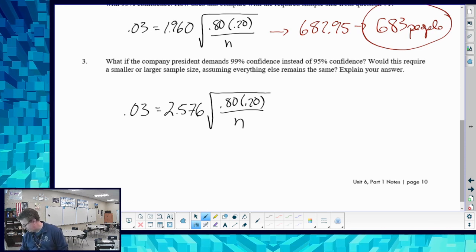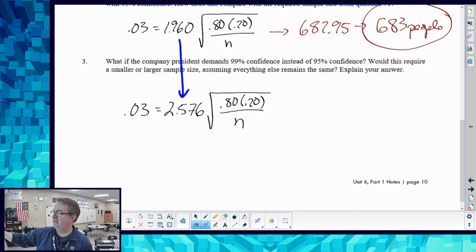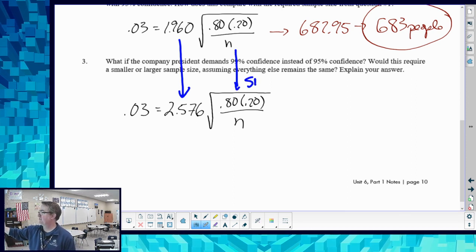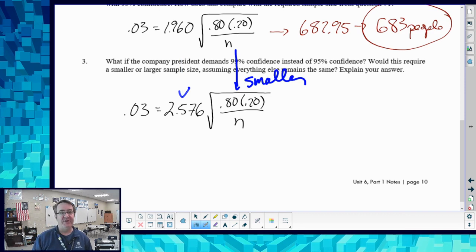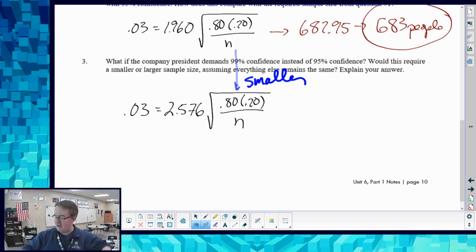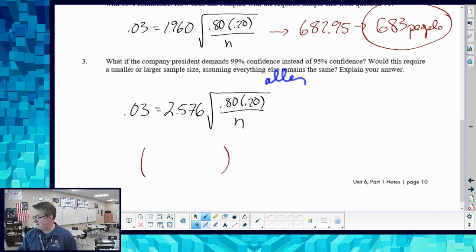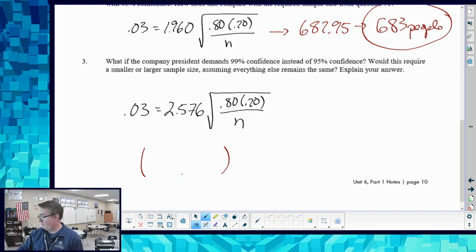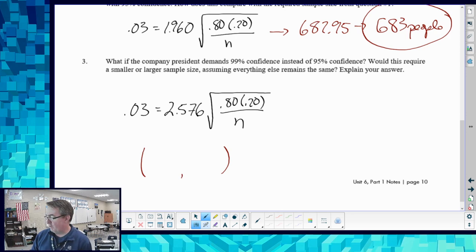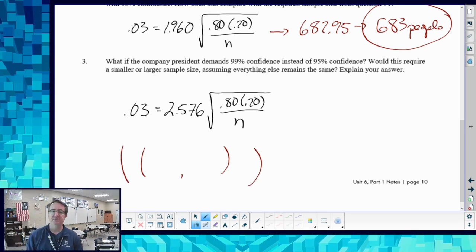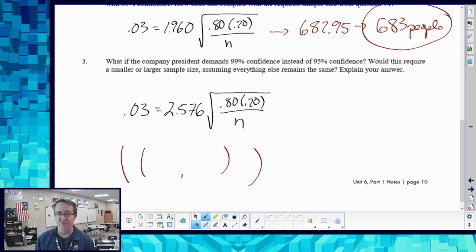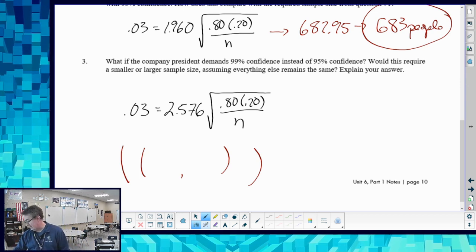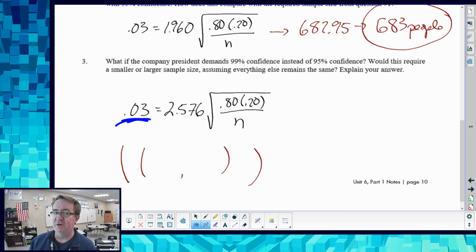So notice here, if you think about what's going on, my z star is getting larger. And if that's getting larger to get to the 3%, that means that this has to get smaller. Well, how's the only thing I can get that smaller? I need to divide by a larger number. So it kind of makes sense if I'm going from a 95% confidence interval. Your sample size affects your standard error. So if I want more, if I want this bigger, you can do one of two different things. Either we can take more space or we need to increase the sample size. Since our space is staying the same here, the only way we can do it is to increase the sample size.